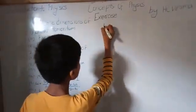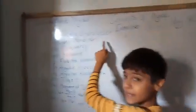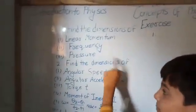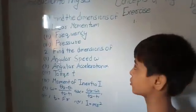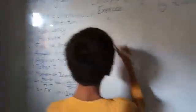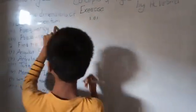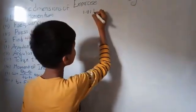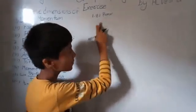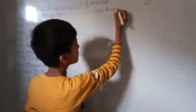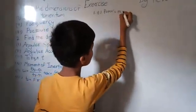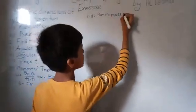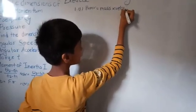Question number one: find the dimensions of linear momentum, frequency, and pressure. Let us start with linear momentum first. We have already studied the formula: p = mv, where p is linear momentum, m is mass, and v is velocity. So we will solve using this formula — linear momentum equals mass into velocity.